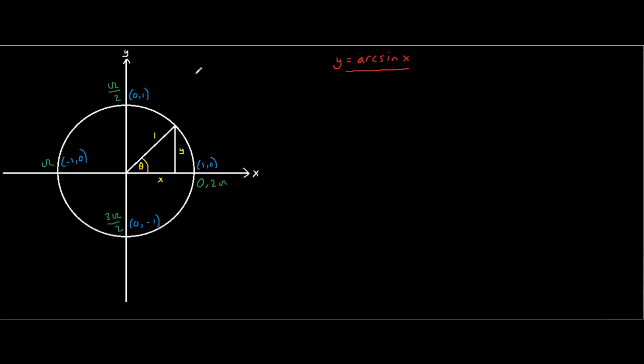You should know that sin minus pi over 2 is minus 1, that sin 0 is 0, and that sin pi over 2 is 1. Using this information right here, you can now create equations that relate to y equals arcsin x. So let's do this.